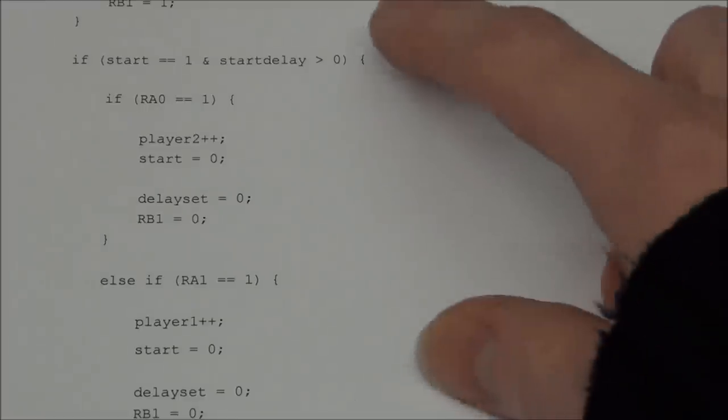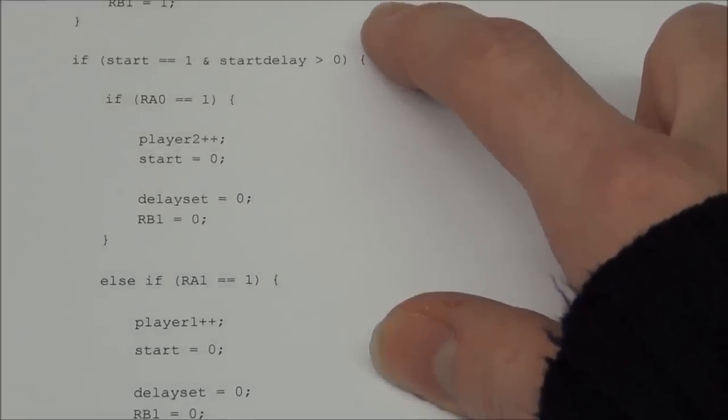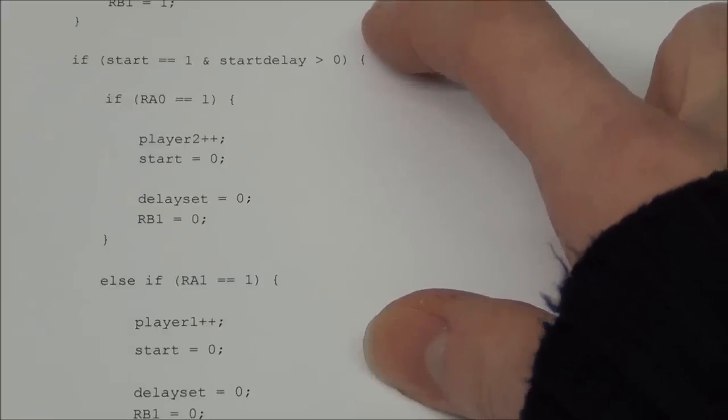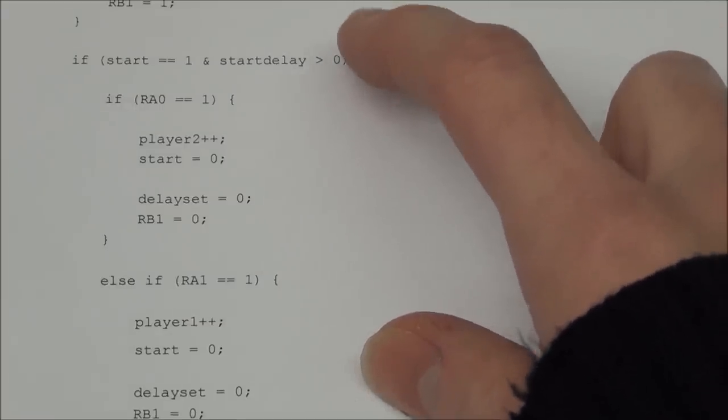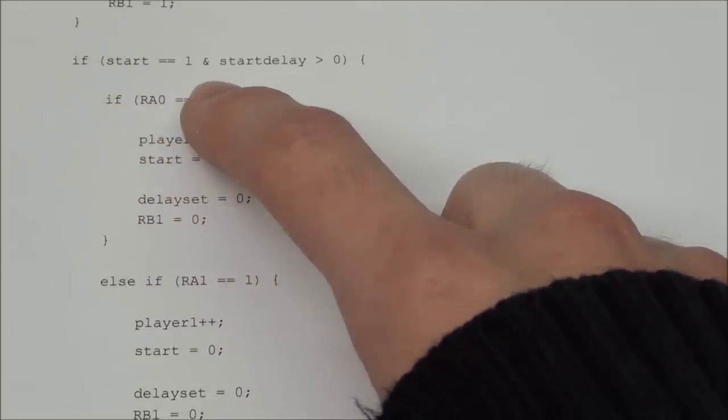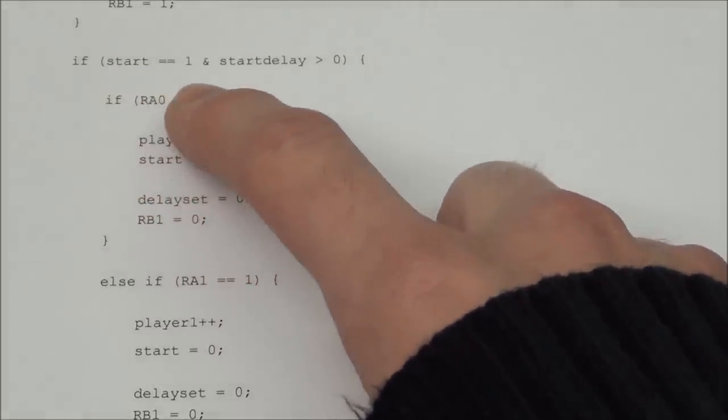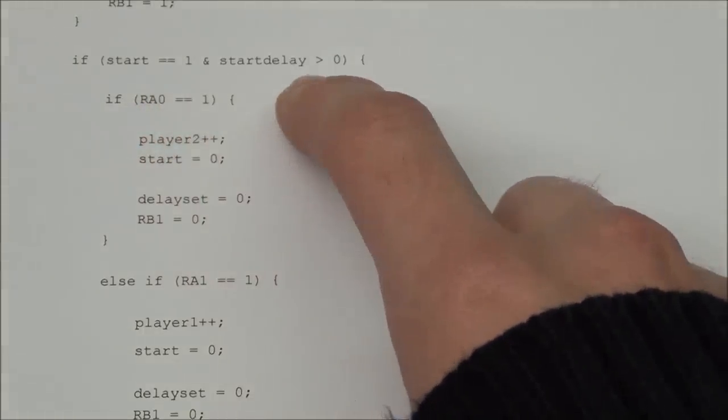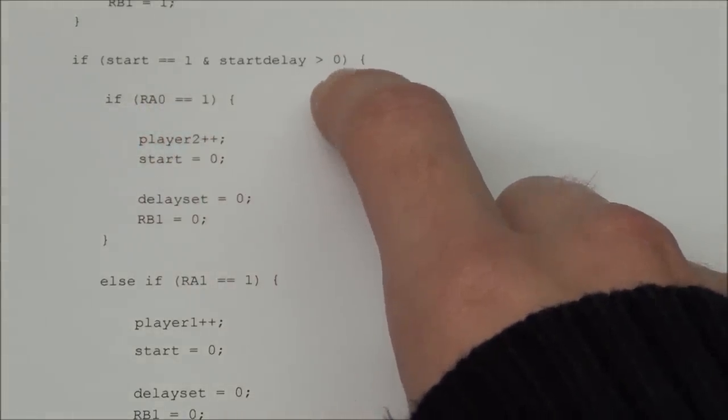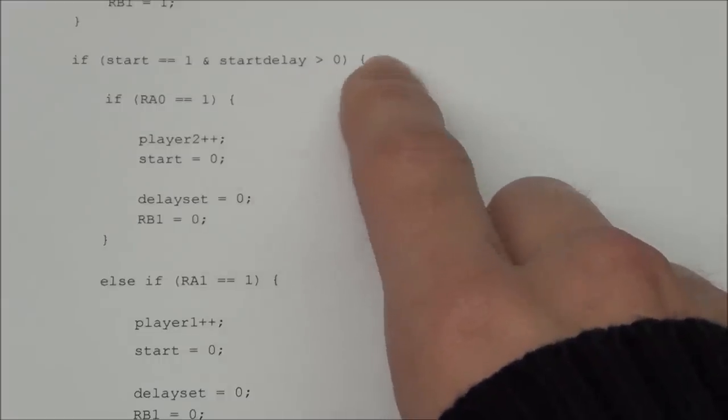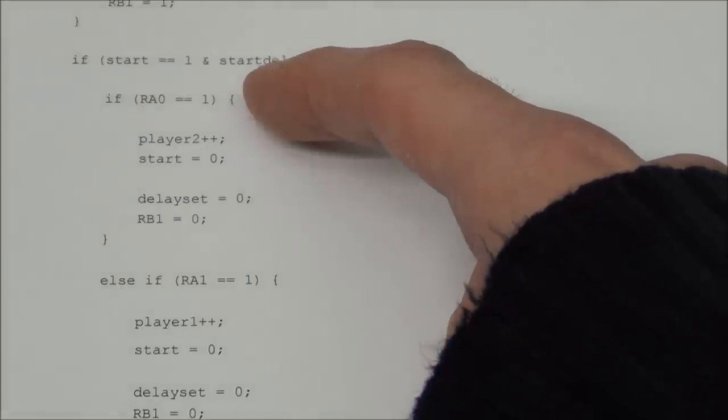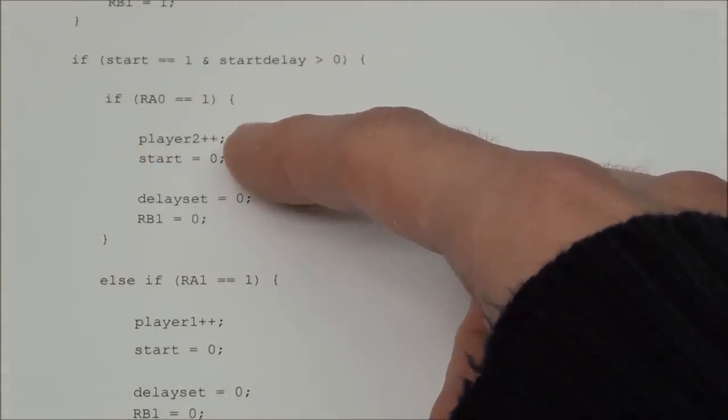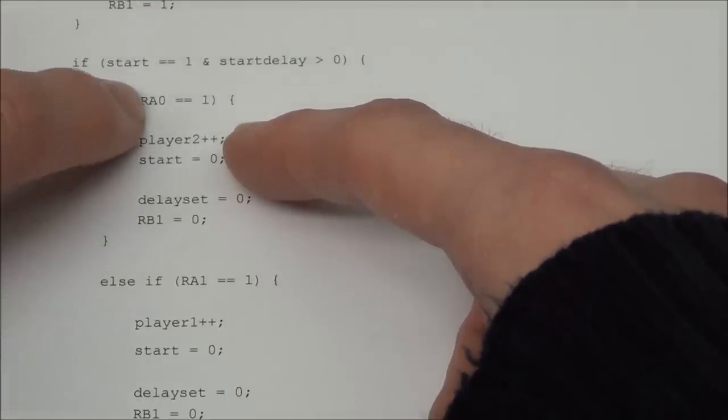But of course there could be someone that pressed the button before the start LED lights up. And if they do they are of course cheating and they have to be punished. So the other player will get a point. And that is done in this if statement here. If start equals 1. Meaning that we have started the game. But the start delay is not zero. Meaning it is counting down. It is getting ready to light up the LED. Then if this button is pressed, RA0, then player 2 will get a point because this is player 1's button.